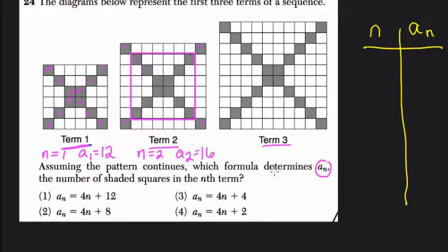And then again, we can see that term 2 is kind of embedded inside of term 3. This is term 2. This whole thing fits right inside this pink square in term 3. And then we add another 4 shaded squares on the outside here.